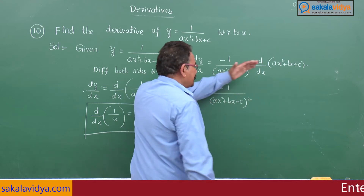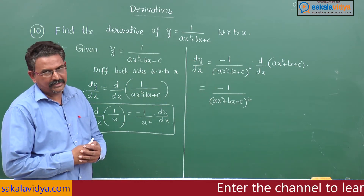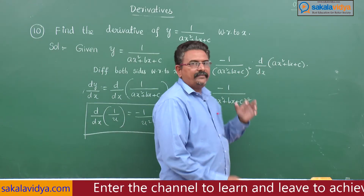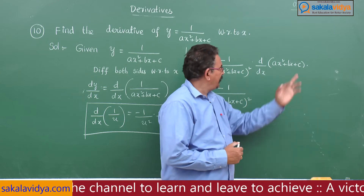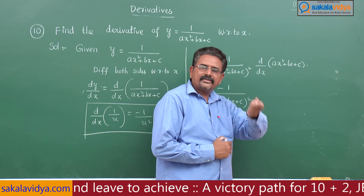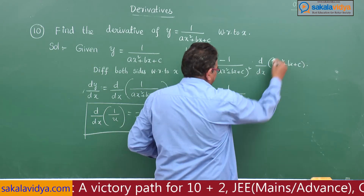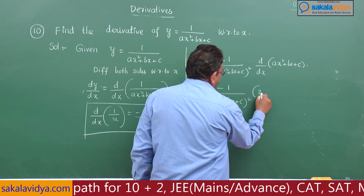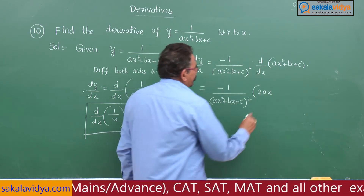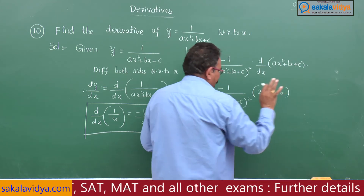After that we get minus 1 by ax square plus bx plus c over square. Let us find the derivative of ax square plus bx plus c clearly. x square derivative is 2x, x derivative is 1, and c being a constant its derivative becomes 0. So this gives 2ax plus b.